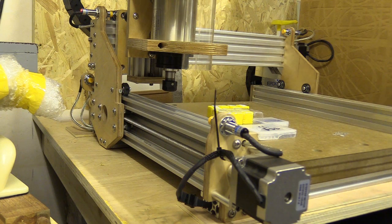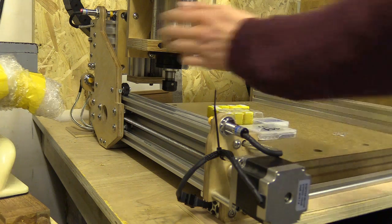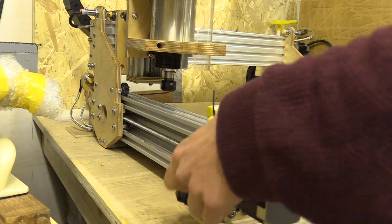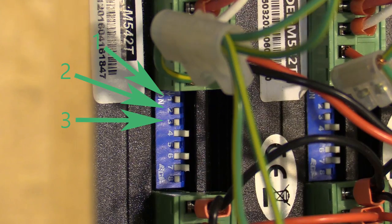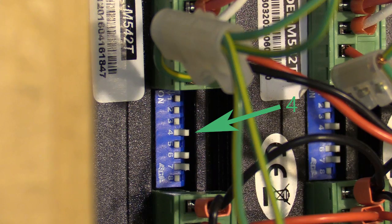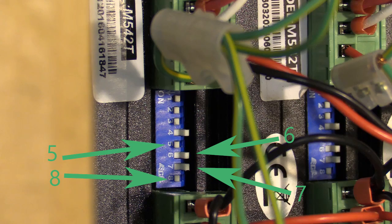That happened because I accidentally left one of the switches on the stepper drivers in the wrong position. This is the correct layout for the switches. 1-3 defines the current being sent to the motors. 4 determines whether the motors receive half or full current while idle, and 5-8 define the microstepping.